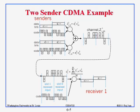You can write down what is on the air, and now each person correlates with their code. The first person correlates with their code and after the correlation figures out that minus 1 was sent in the first slot, and similarly plus 1 was sent in the second slot.